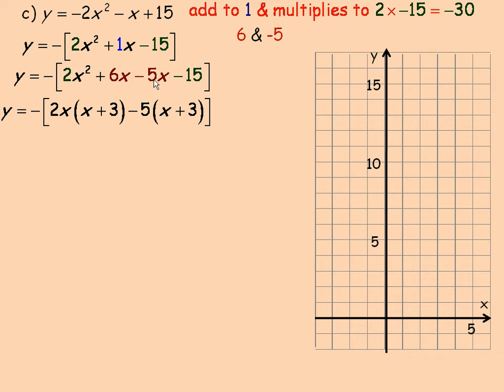We can factor a negative 5 with the last two terms. Negative 5 factored out of negative 5x is x. And negative 5 factored out of negative 15 is positive 3. Remember again, these two parentheses here should be the same.